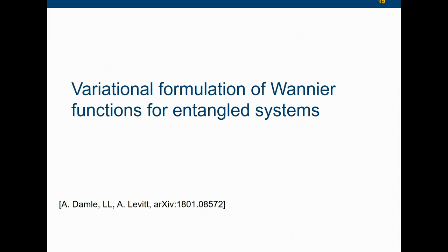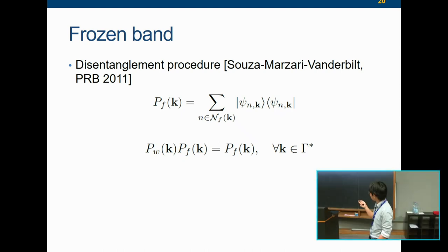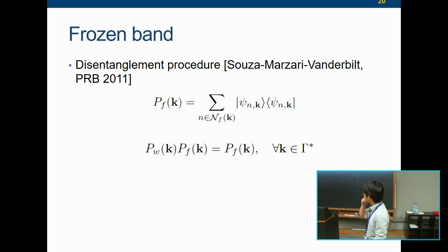With the rest of the time, I want to talk about the recent variational formulation for Wannier functions for entangled systems, which just appeared yesterday. The standard approach in this community is the disentanglement procedure, proposed by Souza, Marzari, and Vanderbilt in 2001. The basic idea is: because you have an entangled band, if you select n orbitals and find n Wannier functions, they're never going to be smooth.